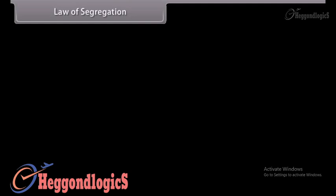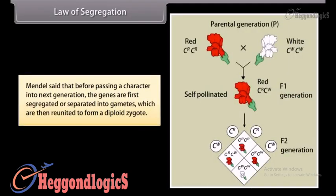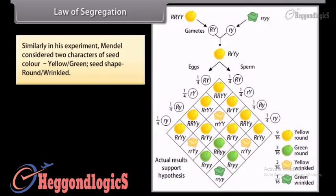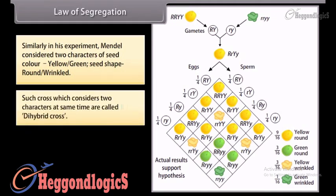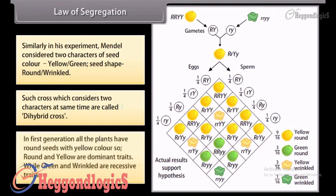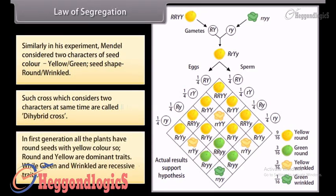The law of segregation states that before passing a character to the next generation, the genes are first segregated or separated into gametes, which are then reunited to form a diploid zygote. Mendel also considered two characters simultaneously — seed color (yellow vs. green) and seed shape (round vs. wrinkled) — in what is called a dihybrid cross. In the first generation, all plants had round seeds with yellow color, confirming that round and yellow are dominant traits, while green and wrinkled are recessive.